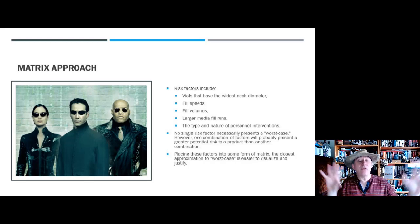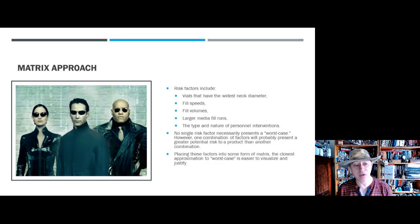We can't do every single combination, so we do need to adopt a matrix approach. We need to look at worst-case conditions—this might be things about the vials that have the widest neck diameter, the slowest or fastest fill speeds, the variations in the volumes, because that's going to determine how long a vial spends at points of the fill to make sure that it's sufficiently long that we can do all of the necessary interventions.